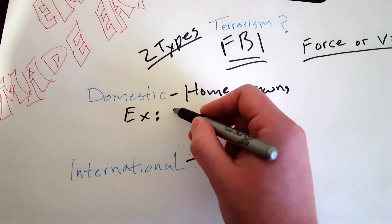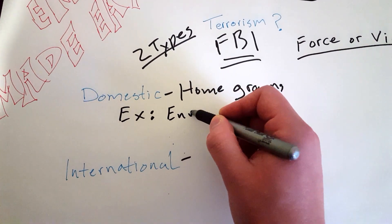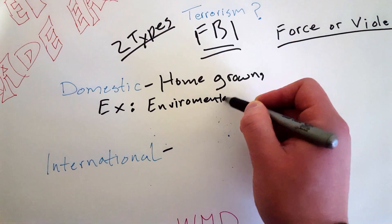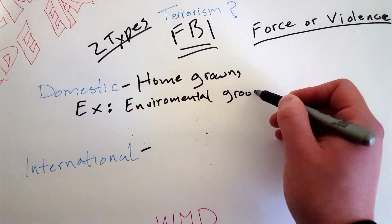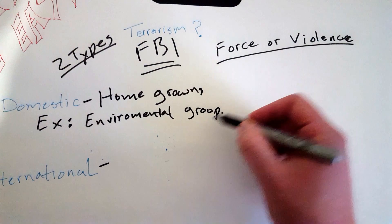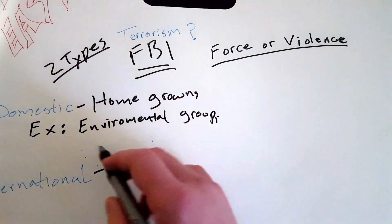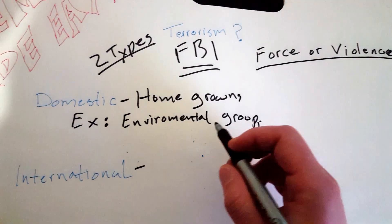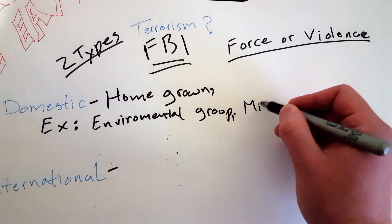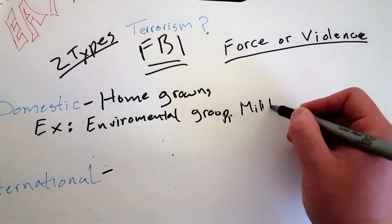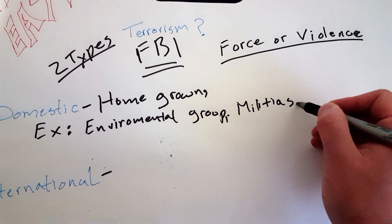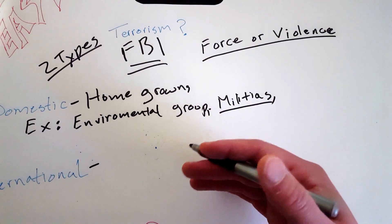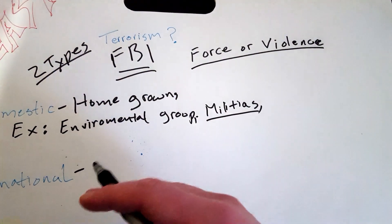Now a few examples of domestic terrorists: could be environmental groups—not all of them obviously, it's the ones that use force or violence to get their point across. This could be militias, for example, people that are starting to collect guns or have a huge amount of guns and are anti-government. This could fall under that category of domestic terrorism.